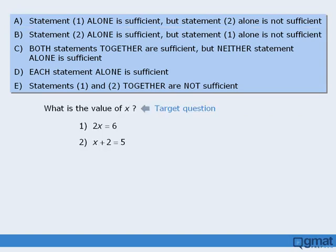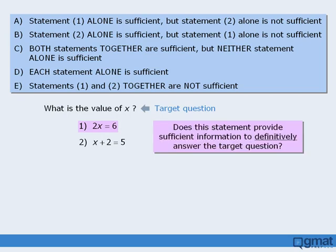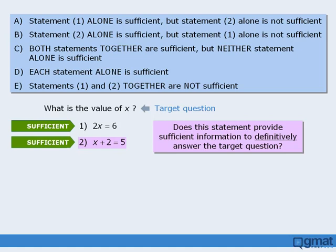Here is another question. The target question still requires us to find the value of x. We'll begin with statement 1 — does it provide sufficient information to definitively answer the target question? The answer is yes, so statement 1 is sufficient. Now on to statement 2 — is this information sufficient? The answer is yes. We can see that if x plus 2 equals 5, then x must equal 3, so statement 2 is also sufficient. In this case, the answer is D, which says that each statement alone is sufficient.